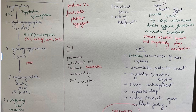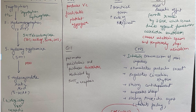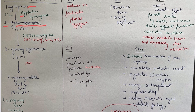Local hormones part 2: serotonin. Let's start with the formation and metabolism of serotonin. Formation starts with tryptophan, which gets converted to 5-hydroxytryptophan (5-HTP) in the presence of the enzyme tryptophan hydroxylase. 5-HTP is then converted to 5-HT, that is 5-hydroxytryptamine, in the presence of the enzyme 5-HTP decarboxylase.